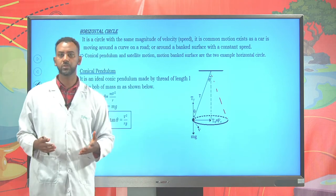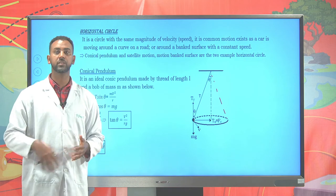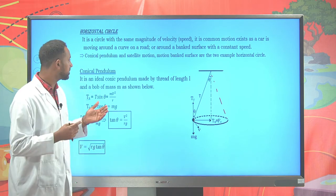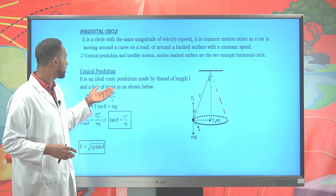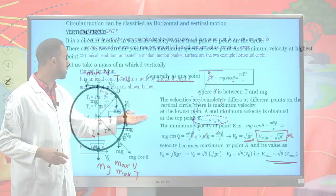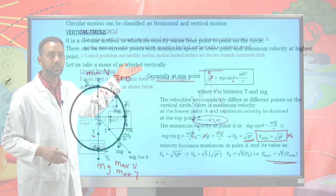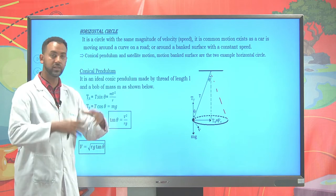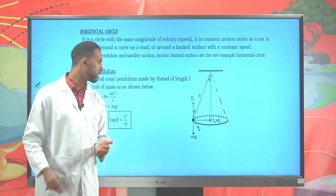Now let's try to see about horizontal circles. For an object in horizontal circular motion, we can look at different examples. One of the most common is the conical pendulum. The motion of satellites is also considered a horizontal circle, as is the motion on a banked surface.